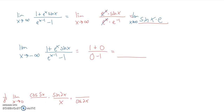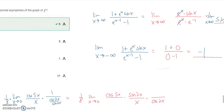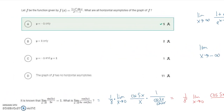As x goes toward negative infinity, plugging in a huge negative value makes e raised to that negative number become 1 over e to a huge number — small divided by huge, which approaches 0. So the numerator becomes 1 plus 0, and in the denominator e to a huge negative number also approaches 0, making 0 minus 1 equal negative 1. Our limit is 1 over negative 1, which is negative 1. The answer is y equals negative 1 only.